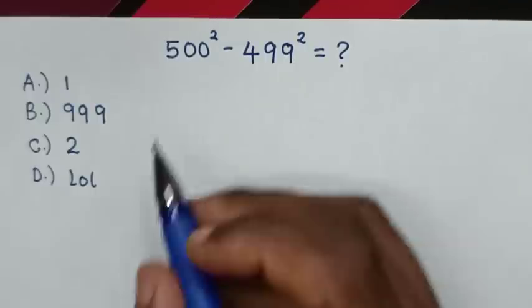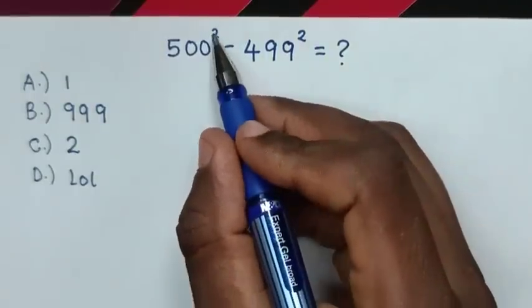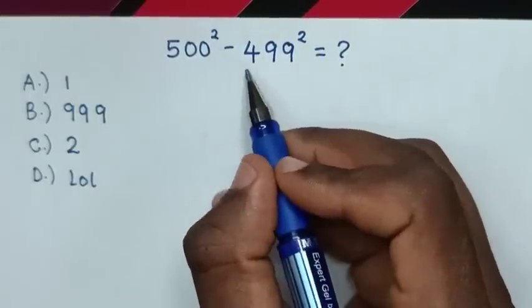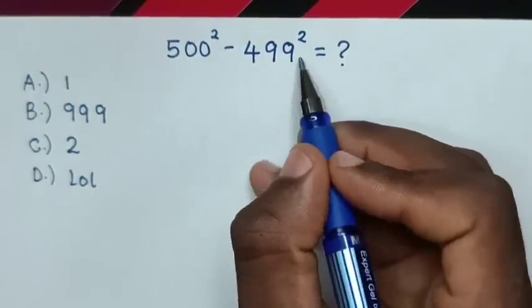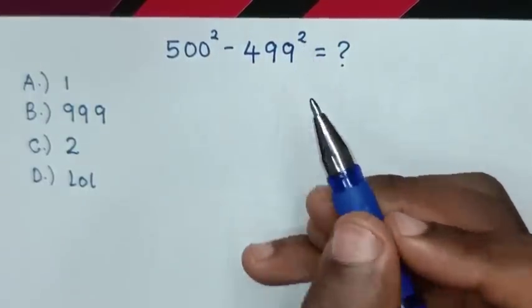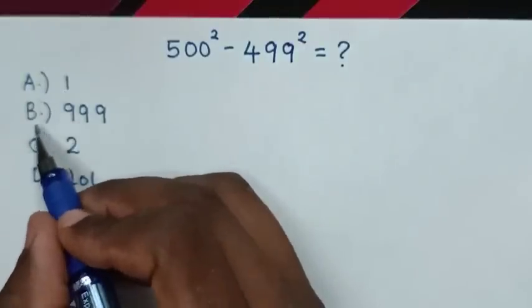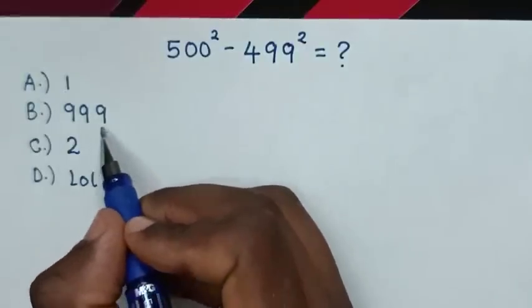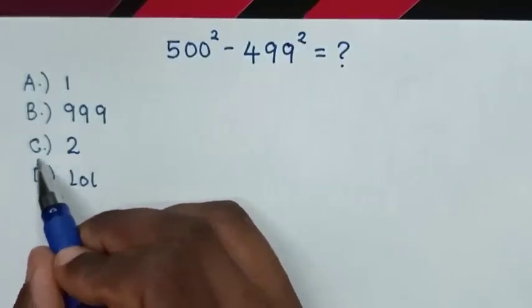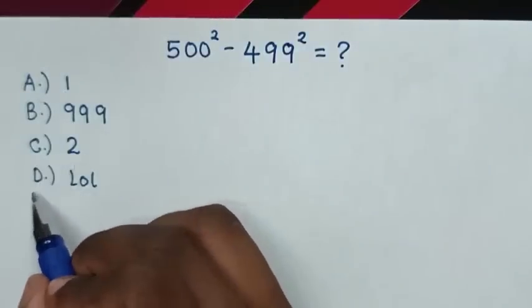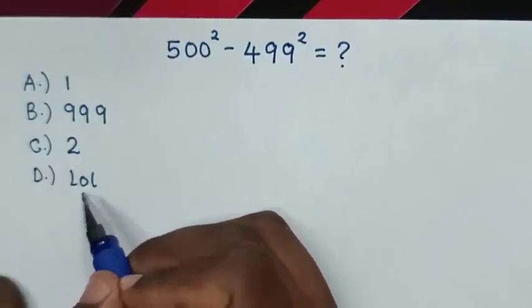Hello, how to solve 500 square minus 499 square? Select between the answer A: 1, B: 999, C: 2, D: lol.